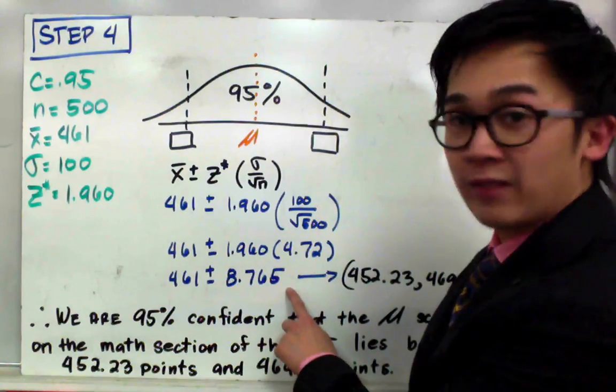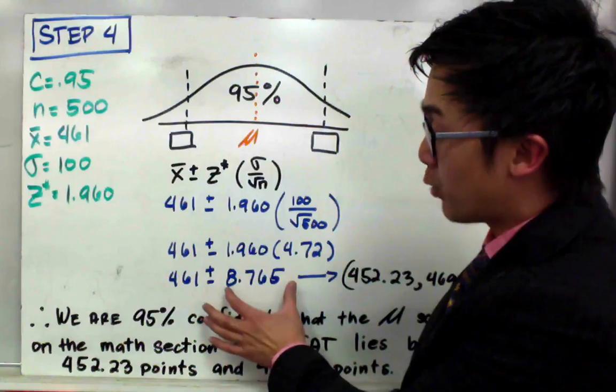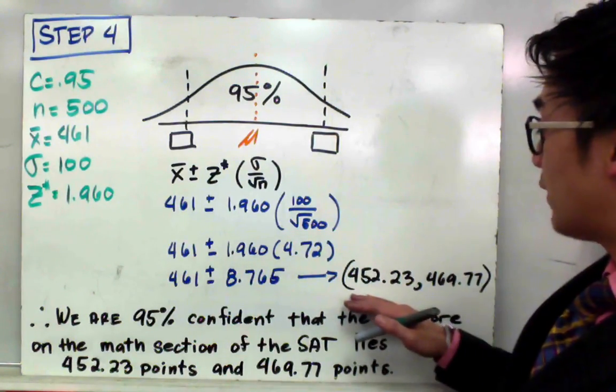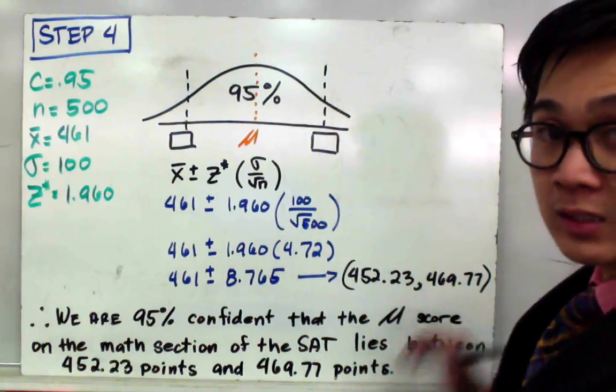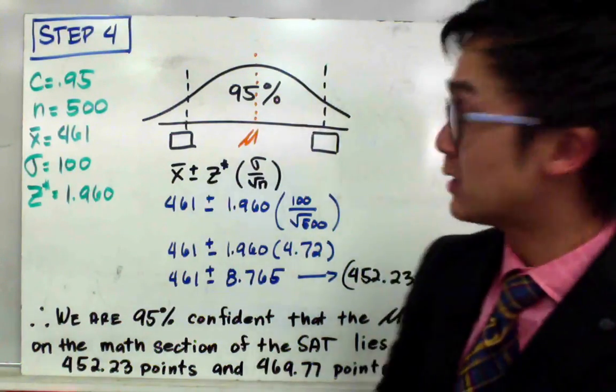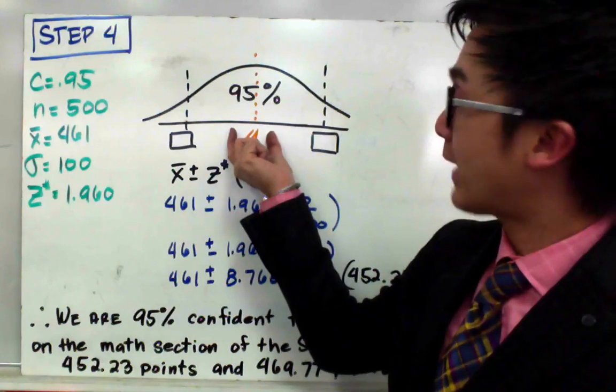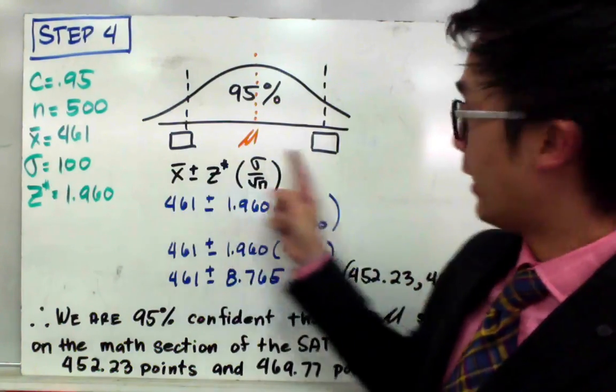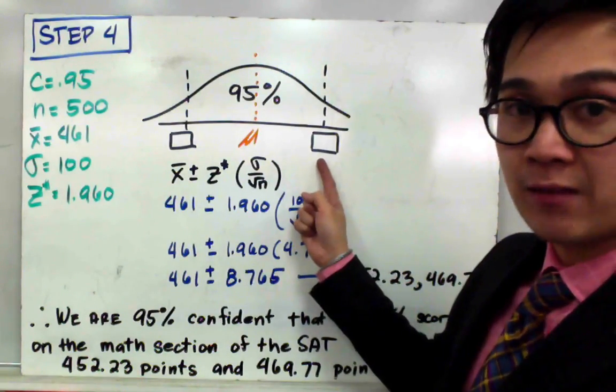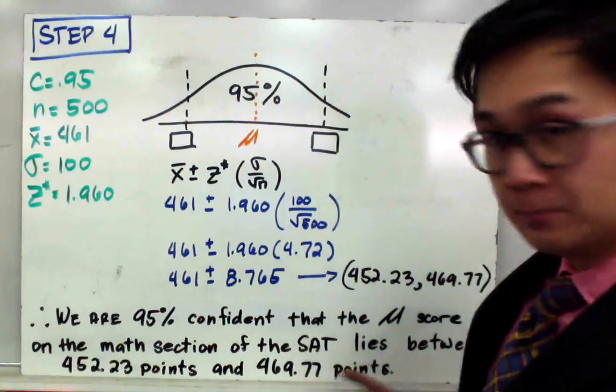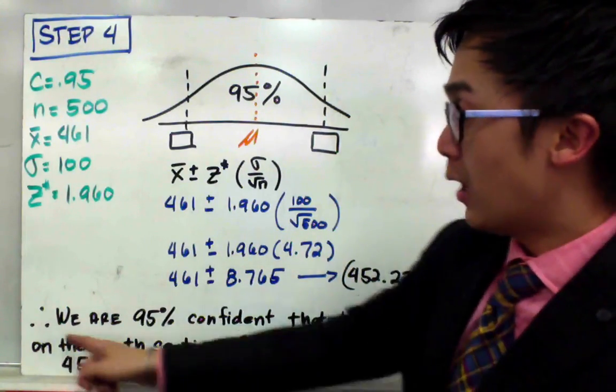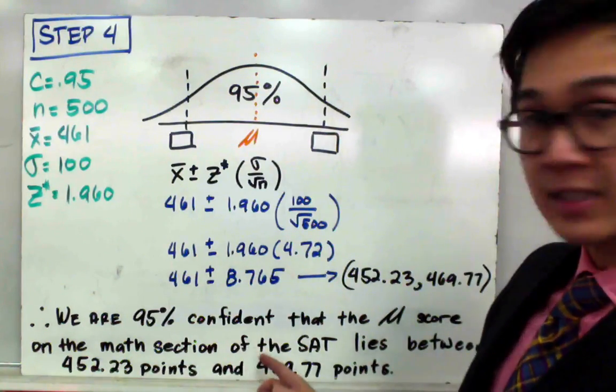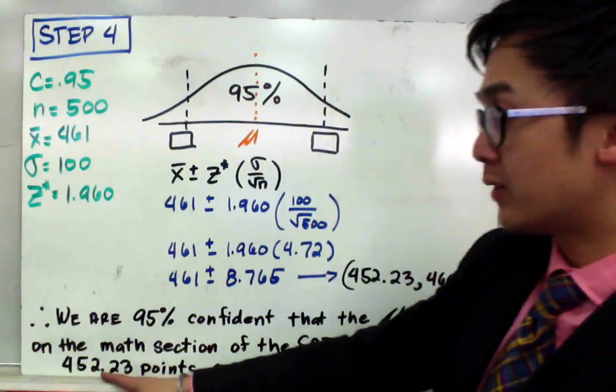Now to find the range of values, just add and subtract 8.765 from 461 and you'll get 452.23 and 469.77. So that means that the true population mean will be captured by our interval which is 452.23 and 469.77. To summarize, we are 95% confident that the true population mean score of the math section of the SAT lies between 452.23 points and 469.77 points.